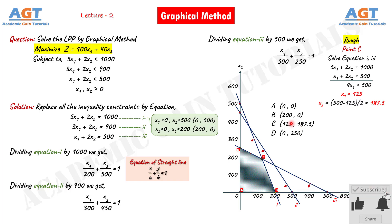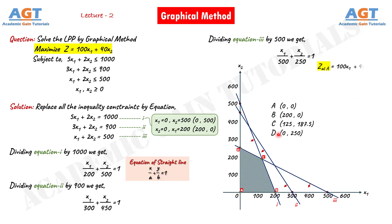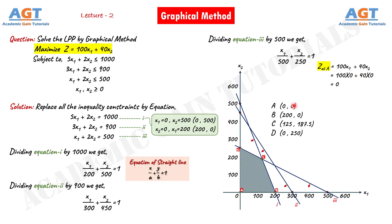Now we know the values of all four extreme points in the feasible region. In the question, we are asked to maximize z equals to 100x1 plus 40x2. We have to find the values of z for points A, B, C, and D. First, value of z at point A: z equals to 100×0 plus 40×0, or z equals to 0. So the value of z at point A is 0.